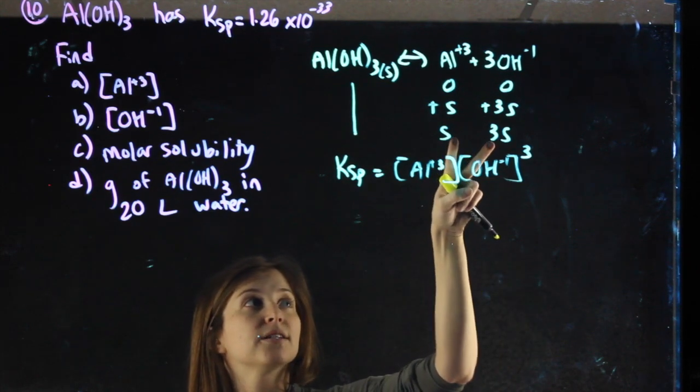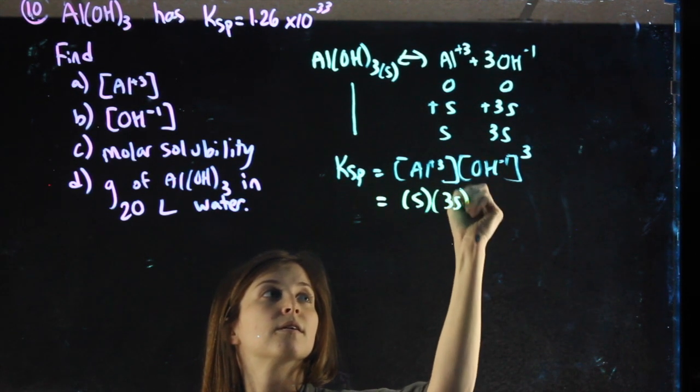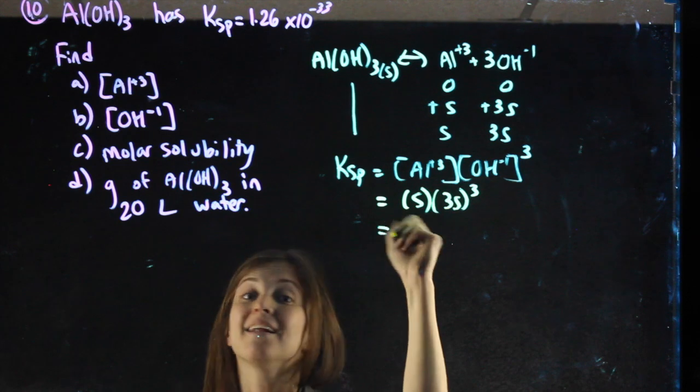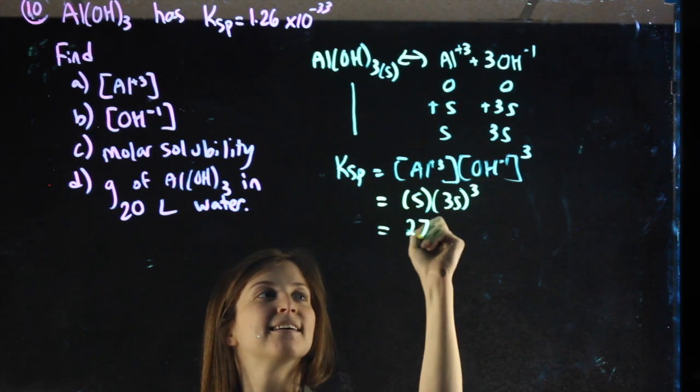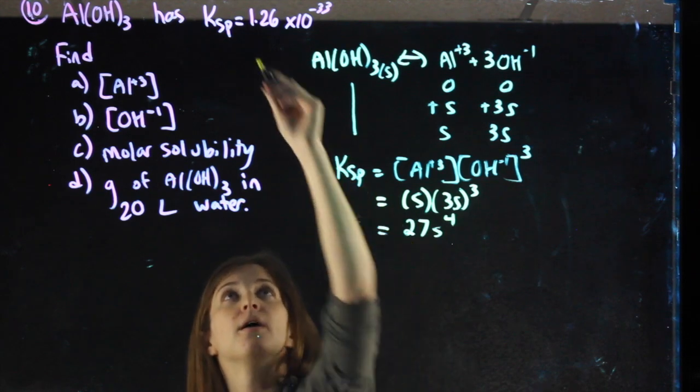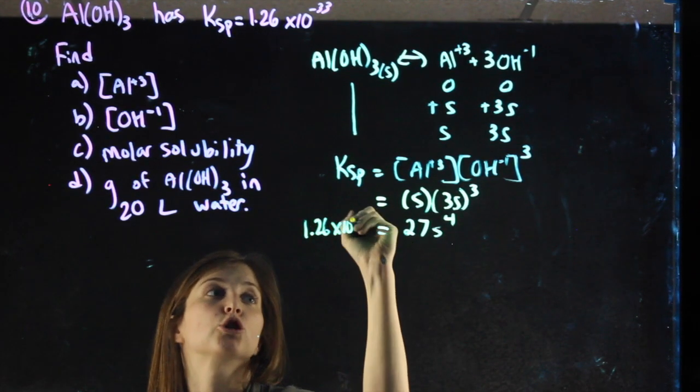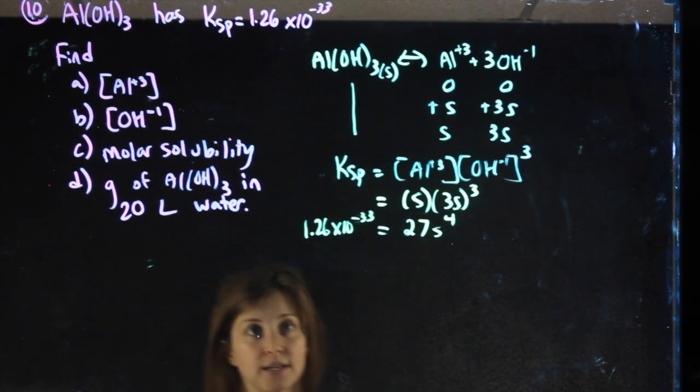So I can plug these values into my KSP. 3 cubed is not 9, it is 27. S cubed times another S is S to the 4th. My KSP value that was given either in the question or on your chart can get plugged in there.